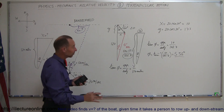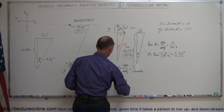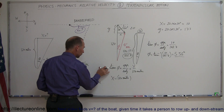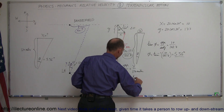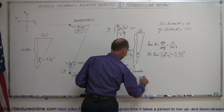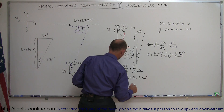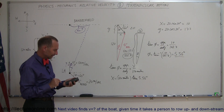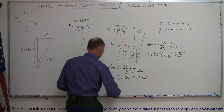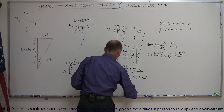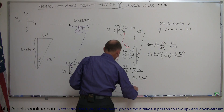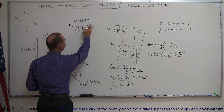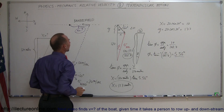Rearranging the equation, x equals 120 miles times the tangent of phi, which is the tangent of 5.56 degrees. Multiplying that out gives us 11.7 miles. So by not accounting for the wind, the pilot will end up 11.7 miles away from Bakersfield and will have to turn the plane around and start flying in the correct direction.